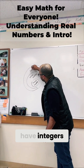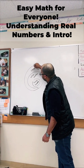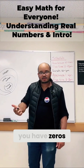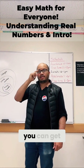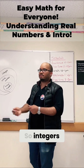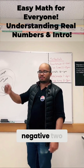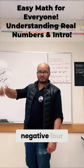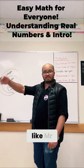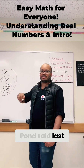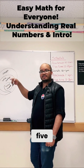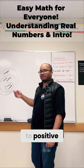And then we had integers, because now that you have zero, you can get negative numbers. So integers go from negative 1, negative 2, negative 3, negative 4, to negative infinity — as Mr. Paul said last time — or 1, 2, 3, 4, 5, 6 to positive infinity.